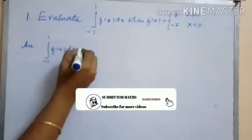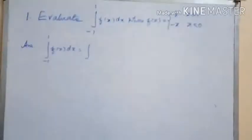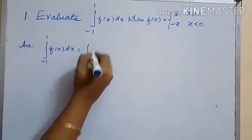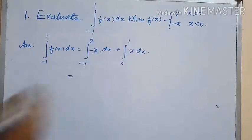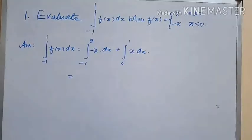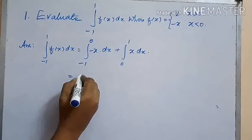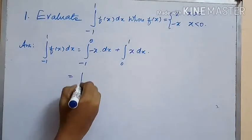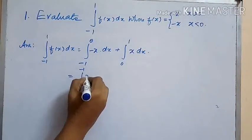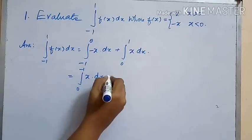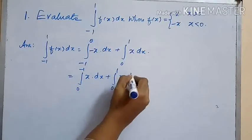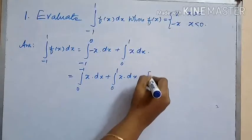The next problem is: evaluate the integral from −1 to 1 of f(x) dx, where f(x) equals x when x is greater than 0, and −x when x is less than 0. We can write this as the integral from −1 to 0 of (−x) dx plus the integral from 0 to 1 of x dx. Using the property of integrals, we interchange the limits from 0 to −1 to remove the negative sign.